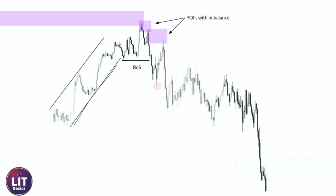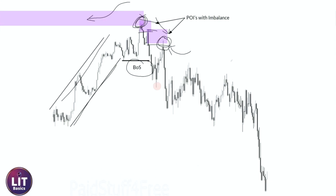Here you can see we channeled up, gave our inducement into our higher timeframe mitigation with cycle complete. Now you can look to trade your order flow. The ideal entry is with a break of relevant market structure after your inducement high — you can then take this mitigation, which is also an order flow mitigation. This would probably also give some other confluences that we'll get into at a later point.